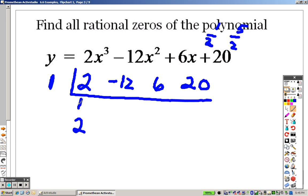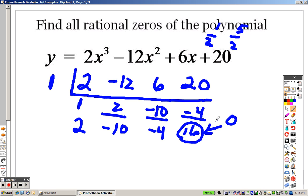So let's start with a positive 1 just to see if I'm lucky. So bring down the 2. 2 times 1 is 2. I get negative 10. Negative 10 times 1 is negative 10, and I'm getting a negative 4. Negative 4 times 1 is negative 4, and I end up getting 16. Since this is 16, I'm looking for a 0. That's what I want there. So really what that's telling me right now is that that's not an answer.